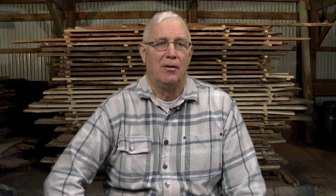Assumption two is that I'm borrowing the money on a 10-year loan at 5% per year interest rate. There are many ways to calculate annual capital cost — in the accompanying iGrow fact sheet you can find more detail. Briefly, type into a cell of an Excel spreadsheet: equals payment, 5%, 10 years, $40,000. After hitting enter, Excel returns $5,180.18, which is what you would pay your banker annually for a 10-year loan of $40,000 at 5% interest.